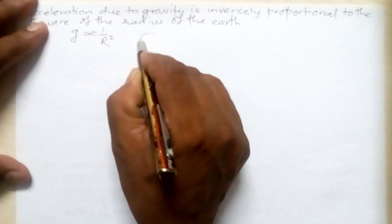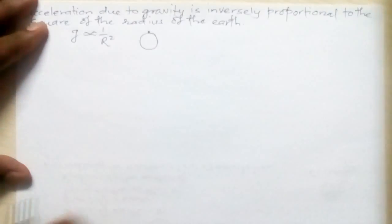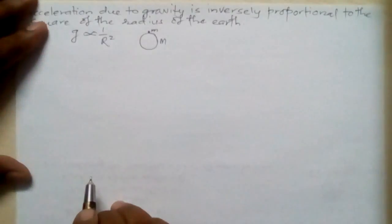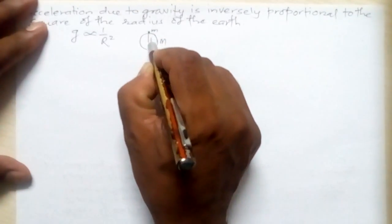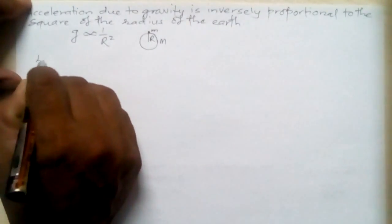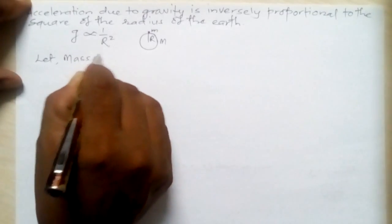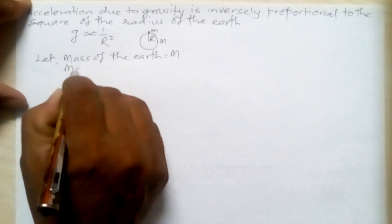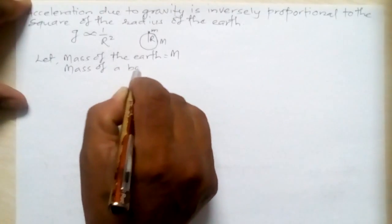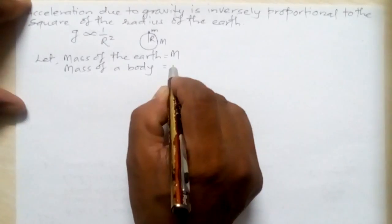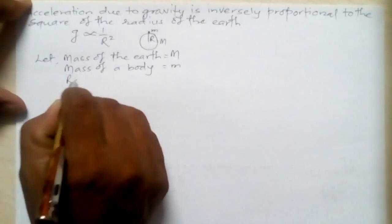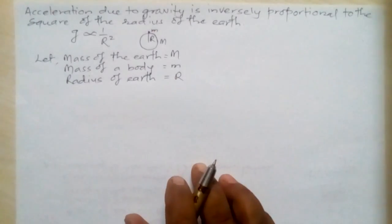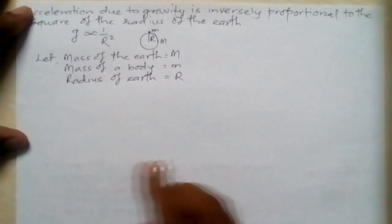Now how can we prove this? Let's say this is the earth and a body is lying on its surface. The mass of the earth is taken as capital M, and the body lying on the surface has mass small m. The radius is taken as capital R. So: mass of the earth equals capital M, mass of the body on the surface is small m, and radius of the earth is denoted by capital R. Acceleration due to gravity is small g.